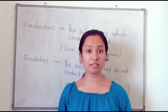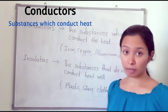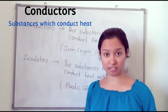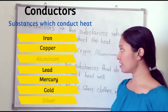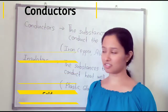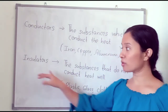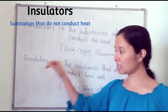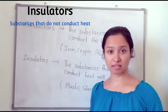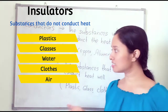Most metals conduct heat and are known as conductors — substances which conduct heat. Examples include iron, copper, aluminum, lead, mercury, gold, and silver. Some substances do not conduct heat and are known as insulators. These include plastic, glass, water, clothes, and air.